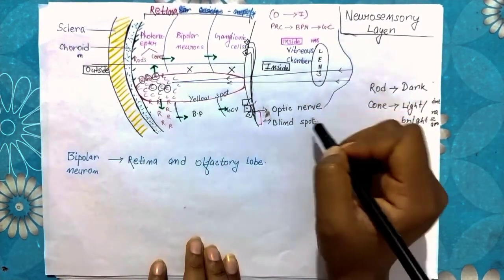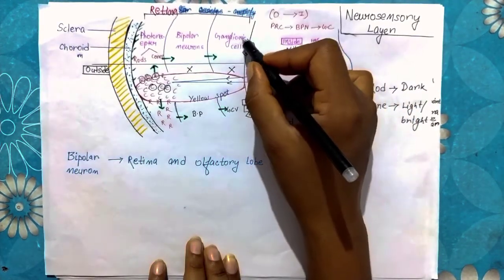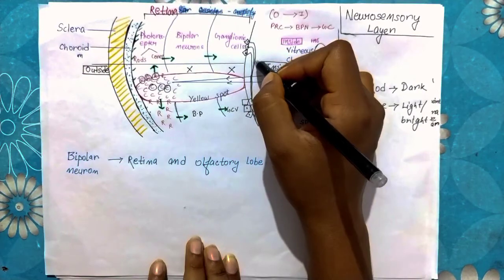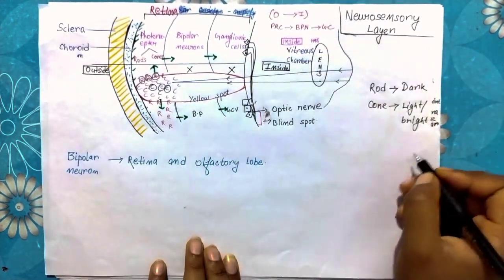Now, let's see the blind spot. The ganglionic cells have an axon part. What is the axon part?